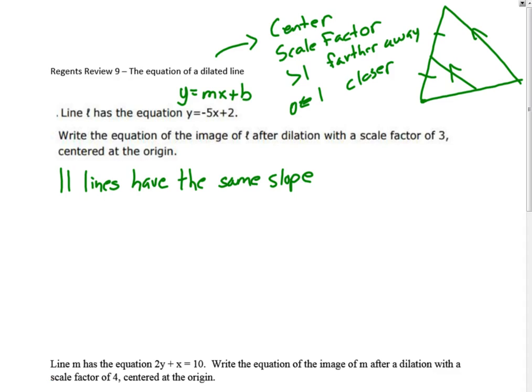Write the equation of the image of L after a dilation with a scale factor of 3 centered at the origin. If we did a quick little sketch of this, the point has a y-intercept of 2 and a slope of negative 5.